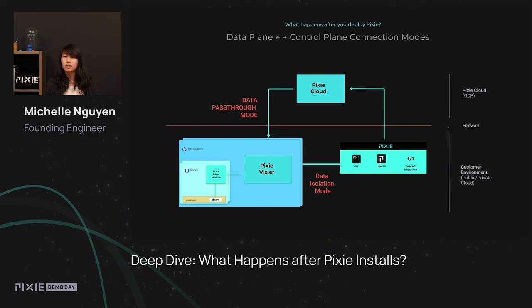In contrast, we have the data isolation mode. In this mode, when you make a request for data, you talk directly to Vizier running on your cluster. You can ensure that no data ever leaves your network, but it also does make it harder for users who are not within your network to access that data.